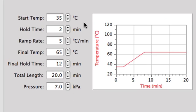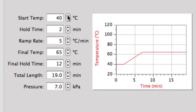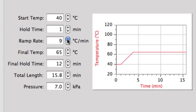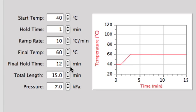For this experiment with my mixture of organic substances, I'm going to start the temperature at 40 degrees and hold that for one minute. I'm going to increase the ramp rate to 10 degrees C per minute and set the final temperature at 60 degrees C.